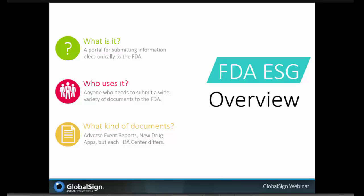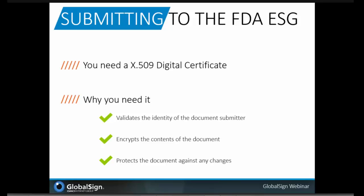Some examples of the types of documents submitted through the Gateway include adverse event reports, biologic license applications, and new drug applications. Those wishing to interact with the ESG will need a digital certificate. The FDA determined that digital certificates were the most cost-effective and secure method to authenticate users and secure submissions. Basically, the identity as vouched by a certificate authority, such as GlobalSign, is used to bind the submitter's identity to the submissions made through the ESG. Beyond validating identity, using certificates also provides additional benefits.